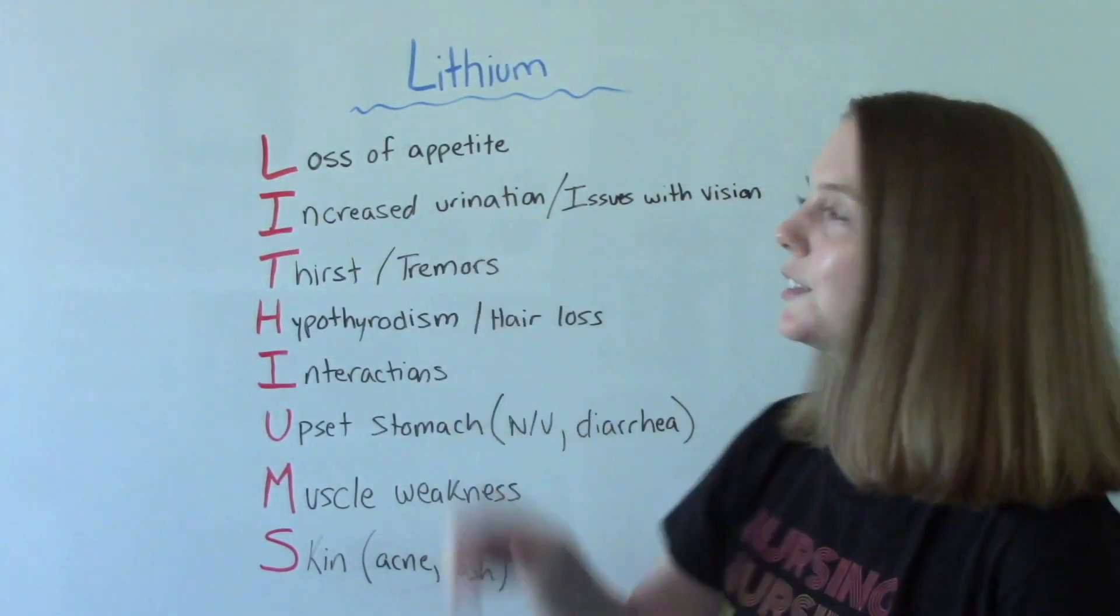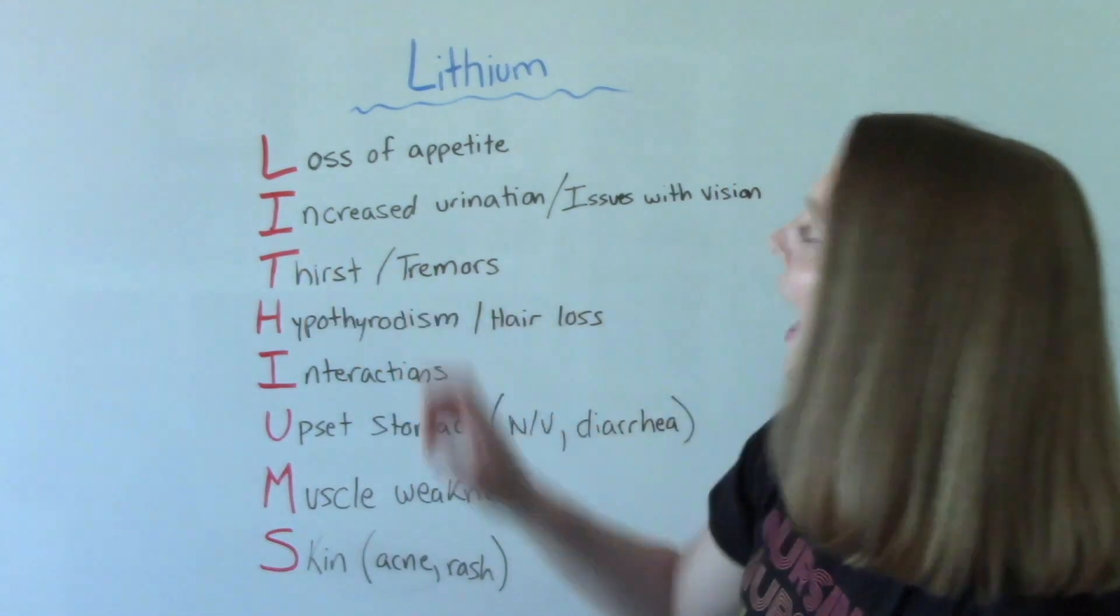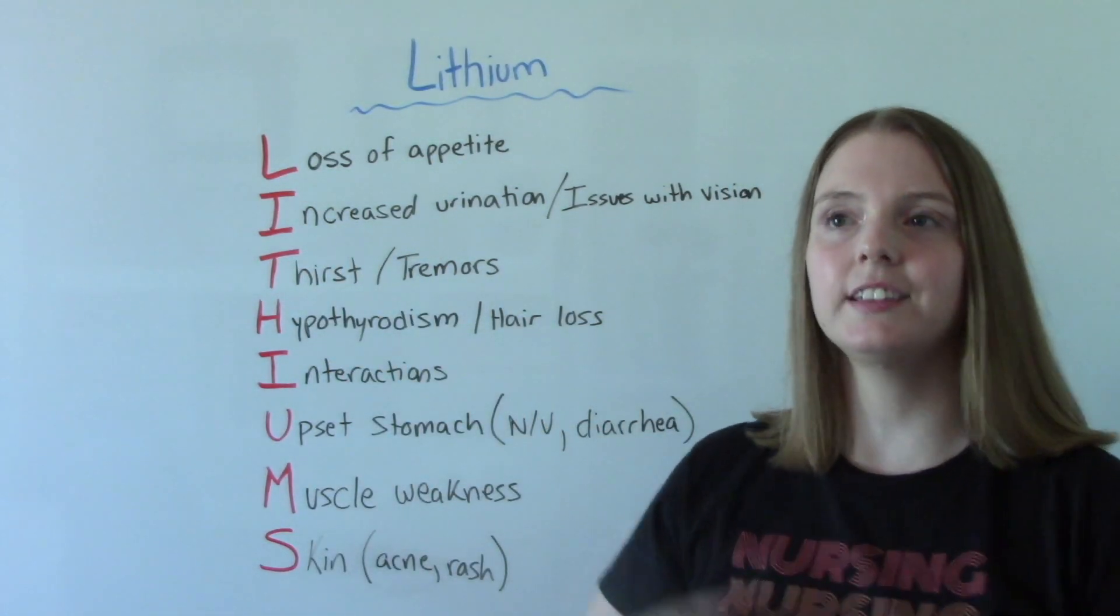L stands for loss of appetite. I is for increased urination. This is a big one.